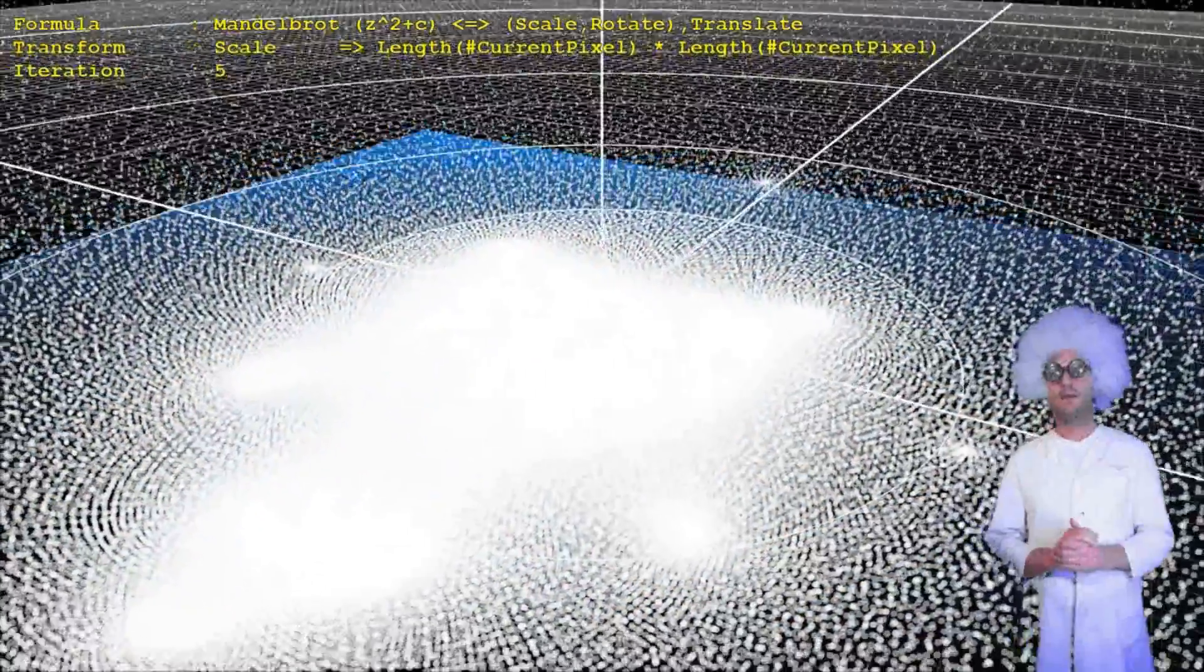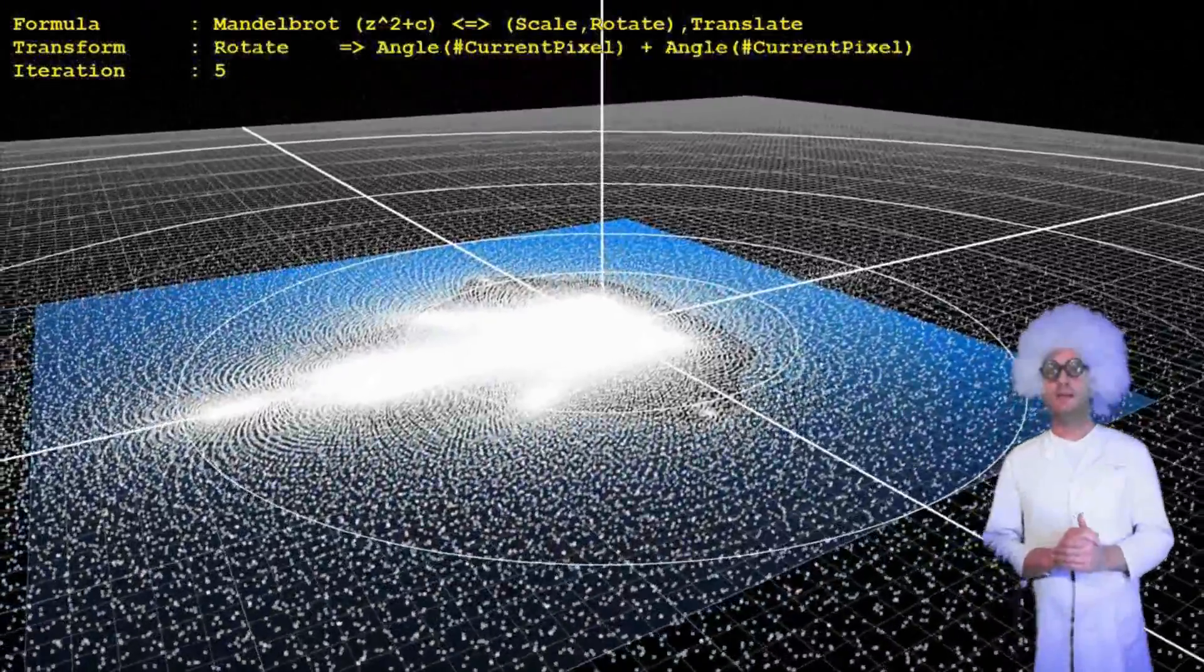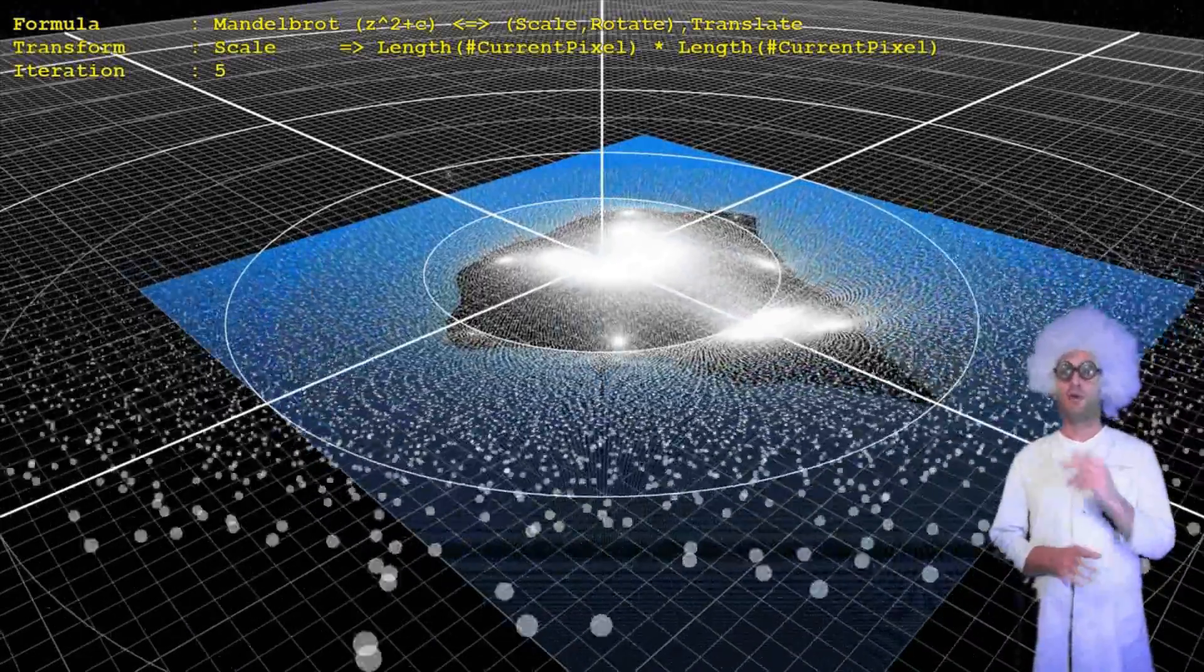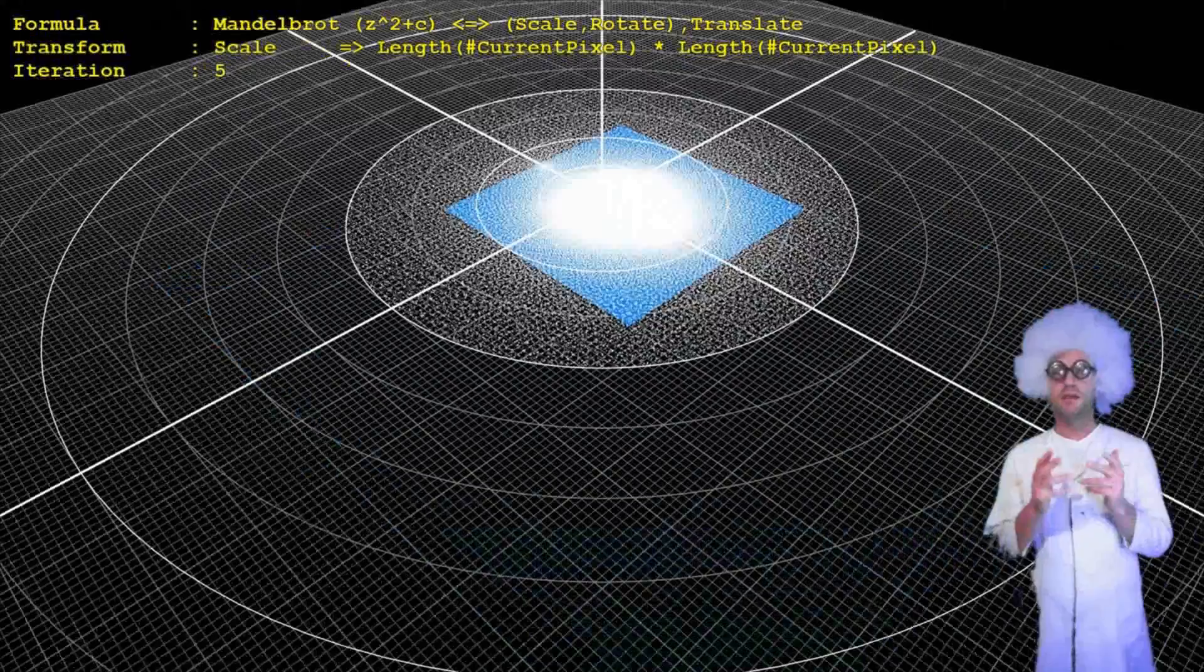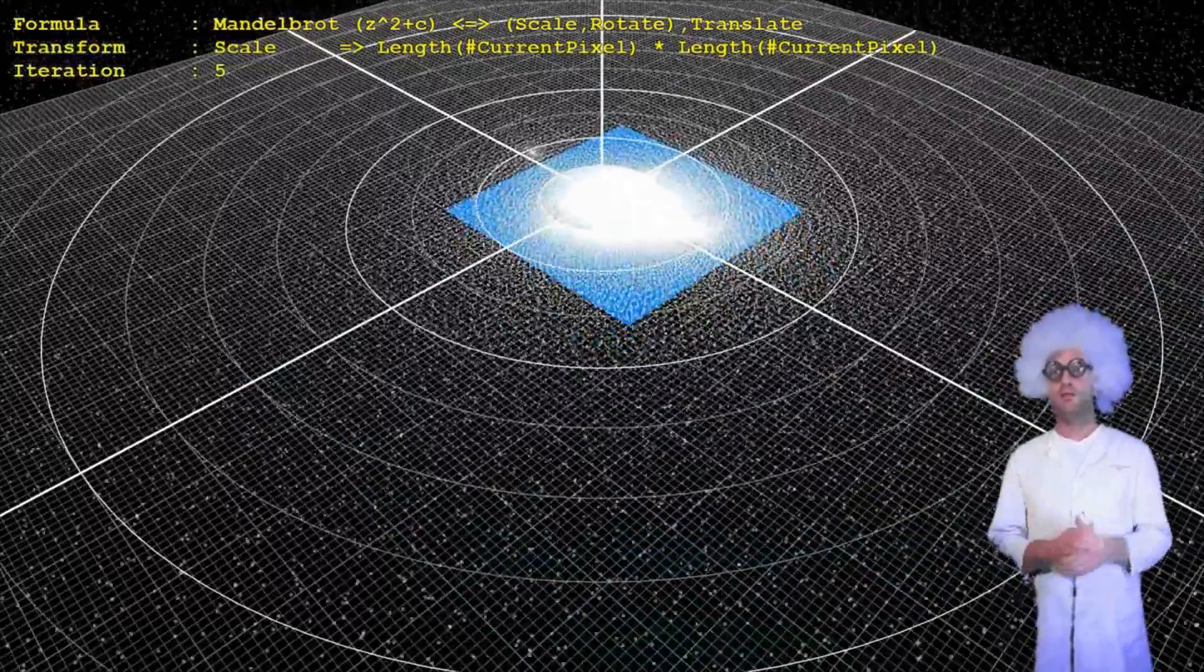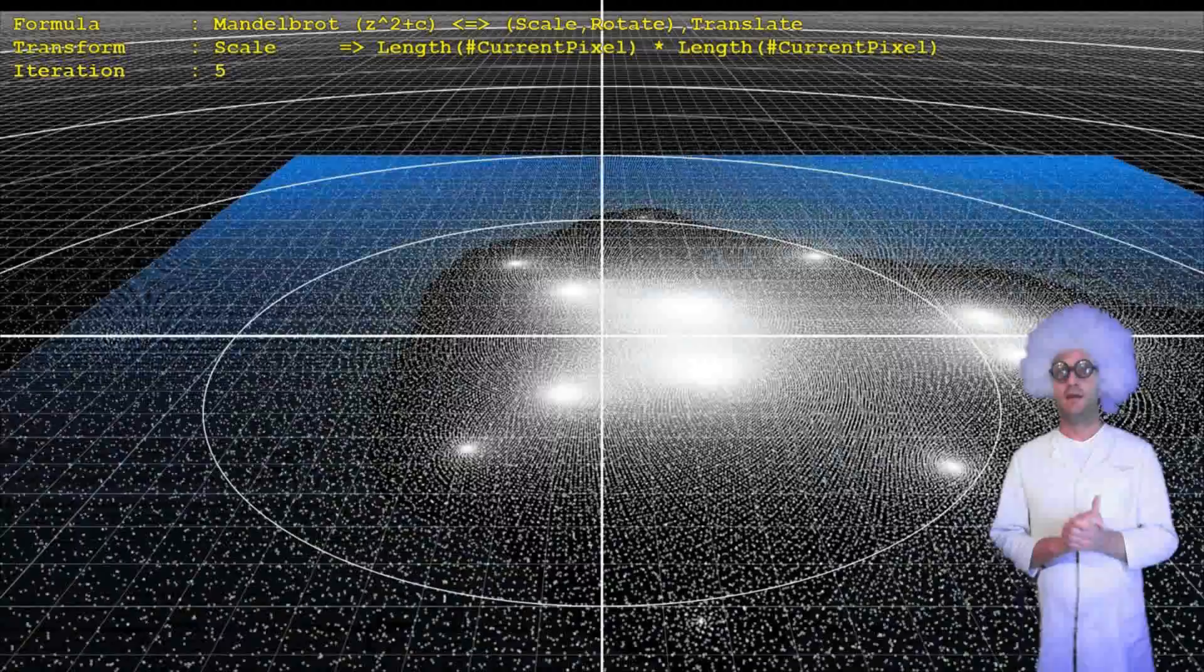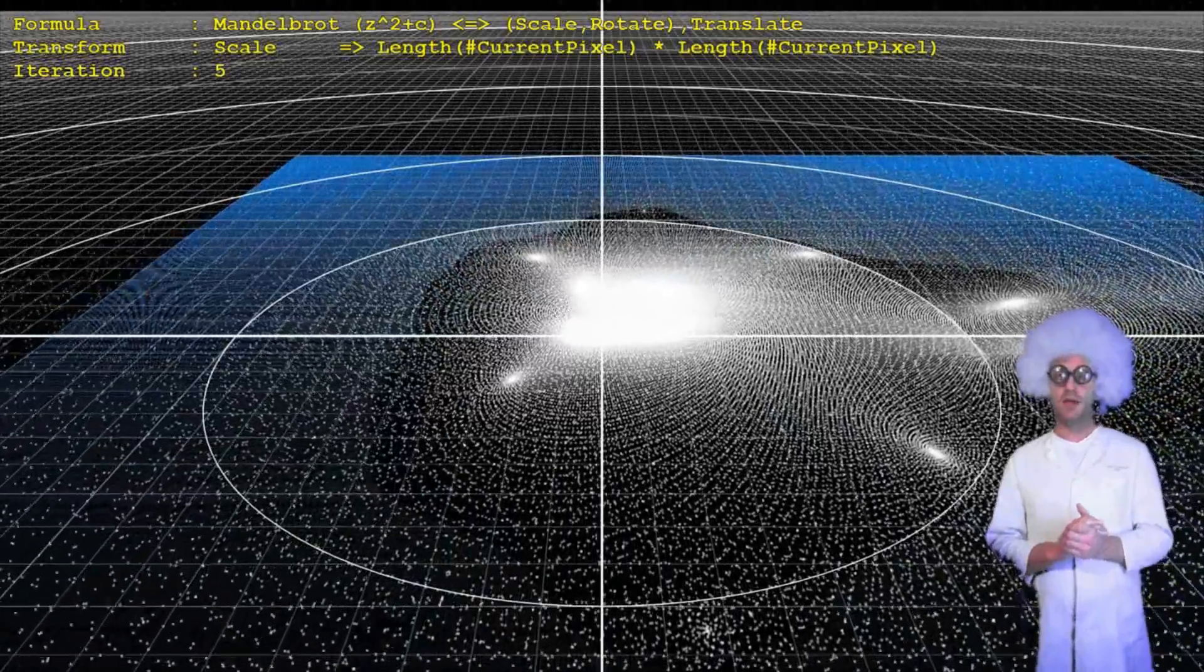The scaling is performed by squaring the distance to zero of the individual points. The points inside the unit circle become dragged to the center. Points outside the unit circle move away from the center. The farther away, the faster the movement, in an exponential relation.